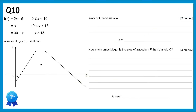For the first part of this question we need to work out the value of a, which is the value of the function in the middle section between x=10 and x=15. The middle section is a horizontal line, and the transition point connects to the first section, which is 2x minus 5. Substituting x=10: 2 times 10 minus 5 equals 15. So a equals 15.